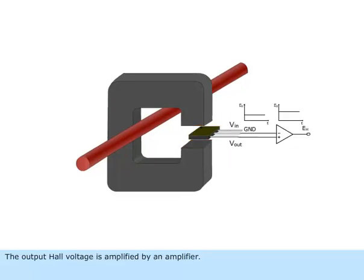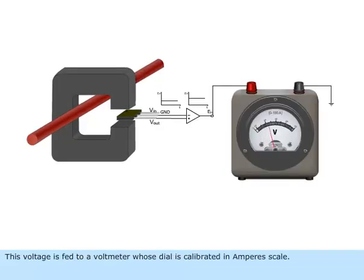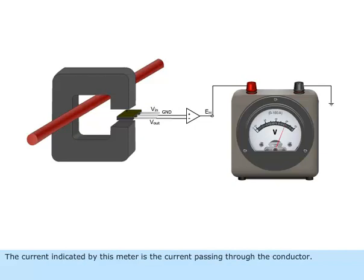The output Hall voltage is amplified by an amplifier. This voltage is fed to a voltmeter whose dial is calibrated in ampere scale. The current indicated by this meter is the current passing through the conductor.